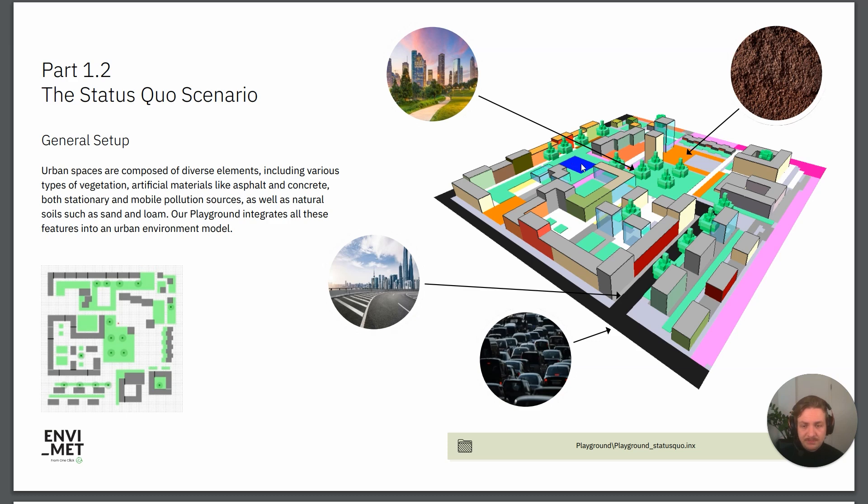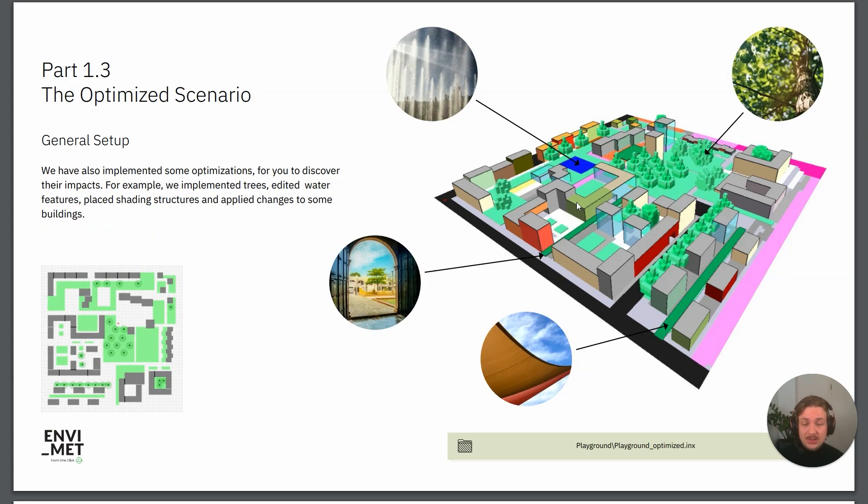This is our status quo scenario, and then we also have an optimized scenario. We have implemented some measures to see the impacts of these. For example, we increased the vegetation cover, we have unsealed some more soils and vegetated them, and for example we have also applied some shading sails into these street canyons here.